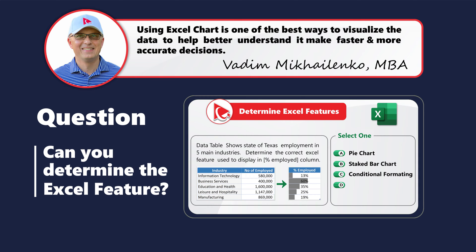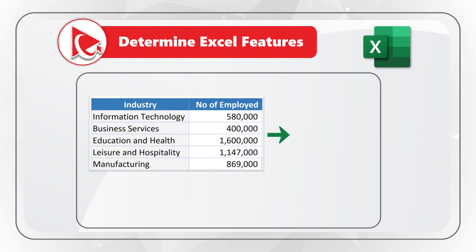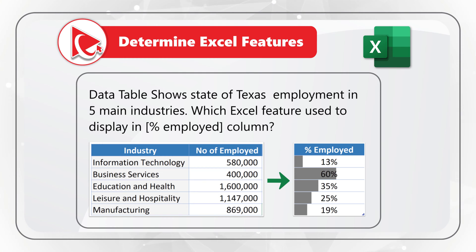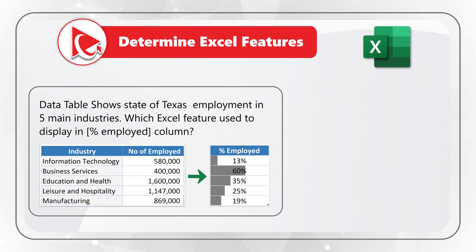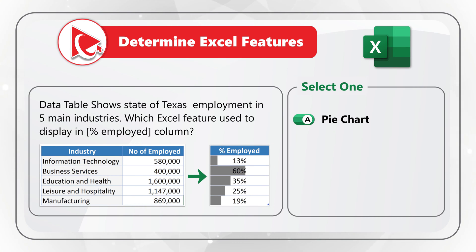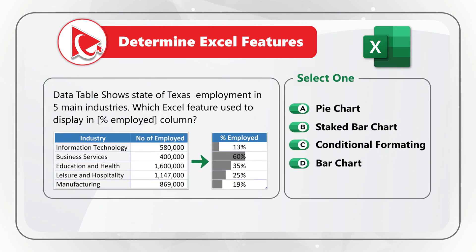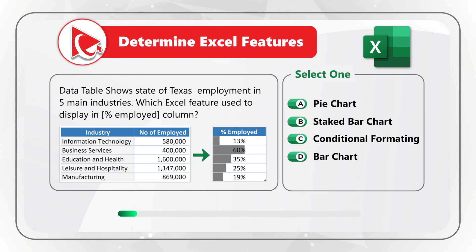Here's an amazing question to test your knowledge of Microsoft Excel features. You're presented with a set of data showing industry and number of people employed — Texas employment in five key industries. You need to determine the correct Excel feature used to display the percentage employed column. You have four choices: Choice A pie chart, Choice B stacked bar chart, Choice C advanced conditional formatting, and Choice D bar chart. Do you know the answer? You typically get no more than five to ten seconds to answer these types of questions on the test.